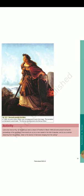Fig. 19: Germania guarding the Rhine. Look once more at Fig. 10. Imagine you were a citizen of Frankfurt in March 1848 and were present during the proceedings of the parliament. How would you — a, as a man seated in the hall of deputies, and b, as a woman observing from the galleries — relate to the banner of Germania hanging from the ceiling? Activity.